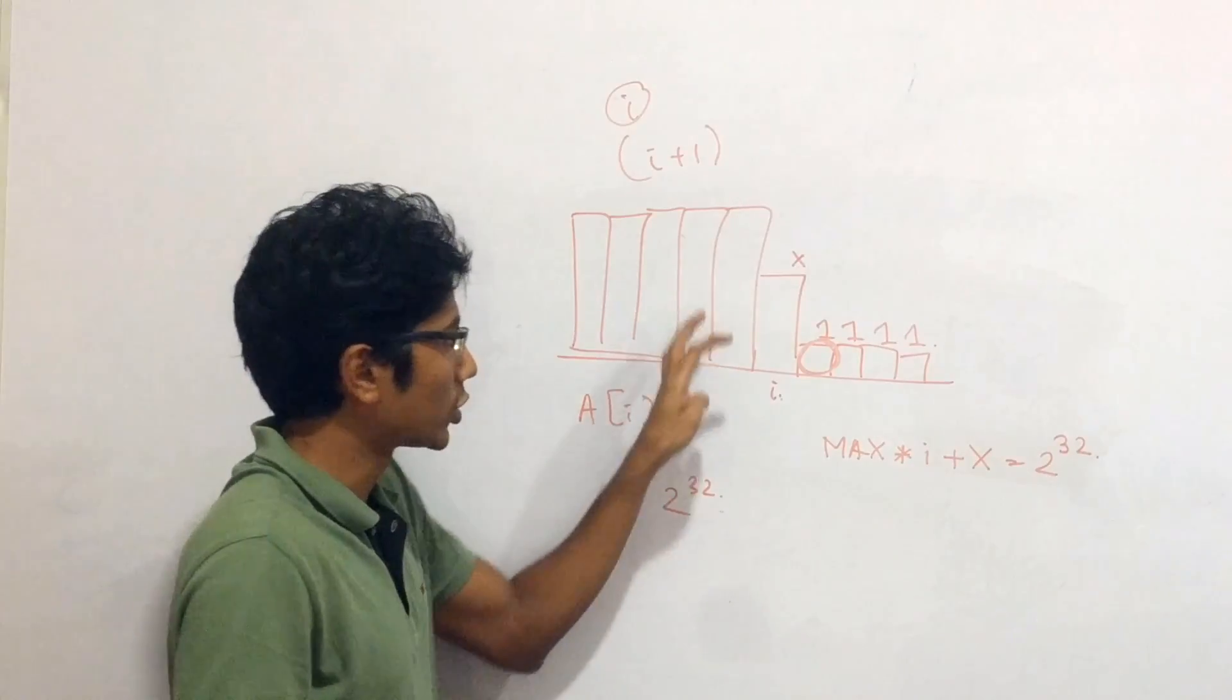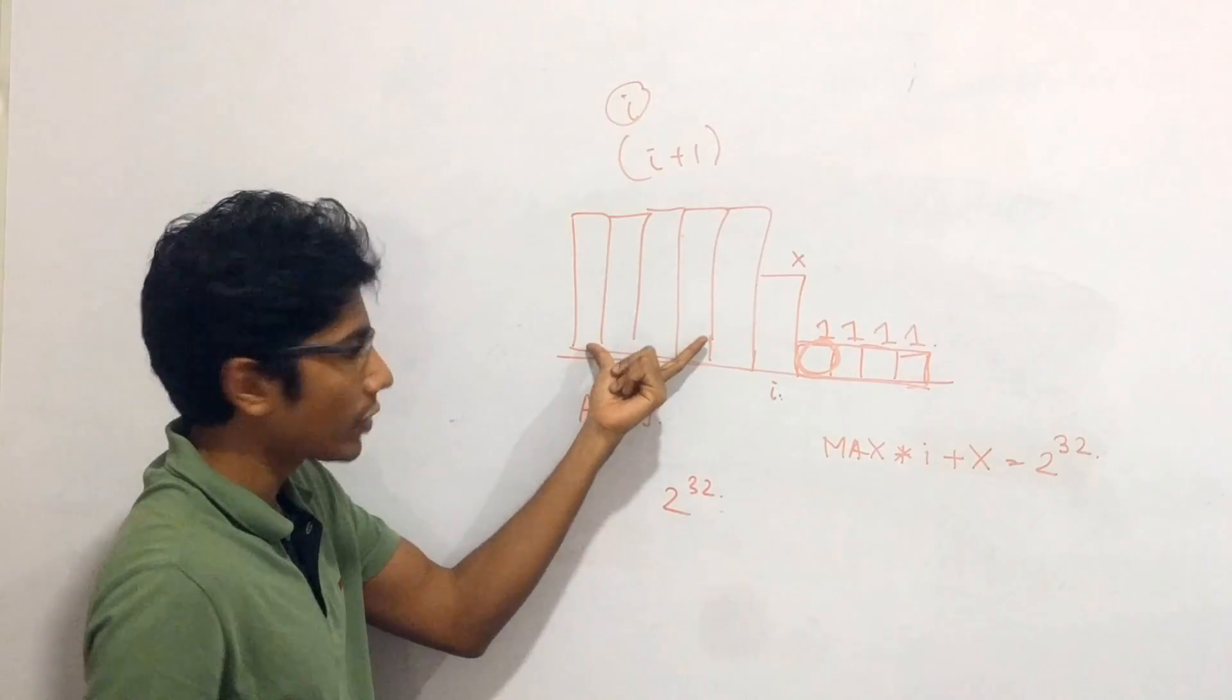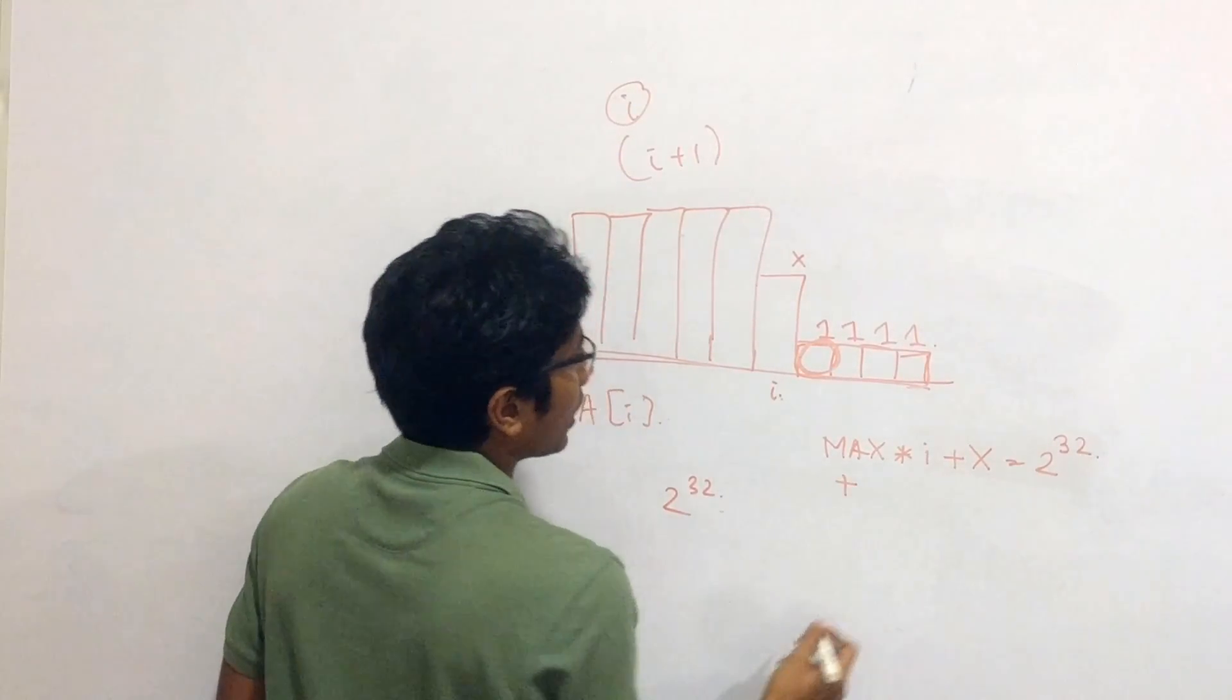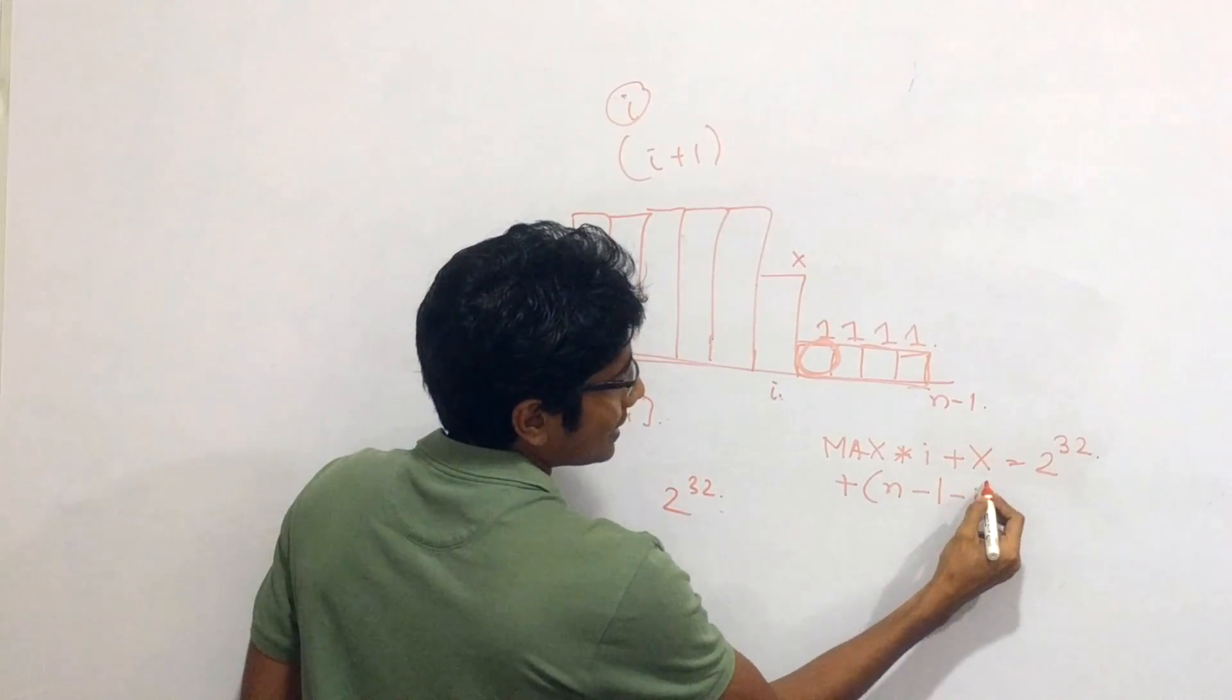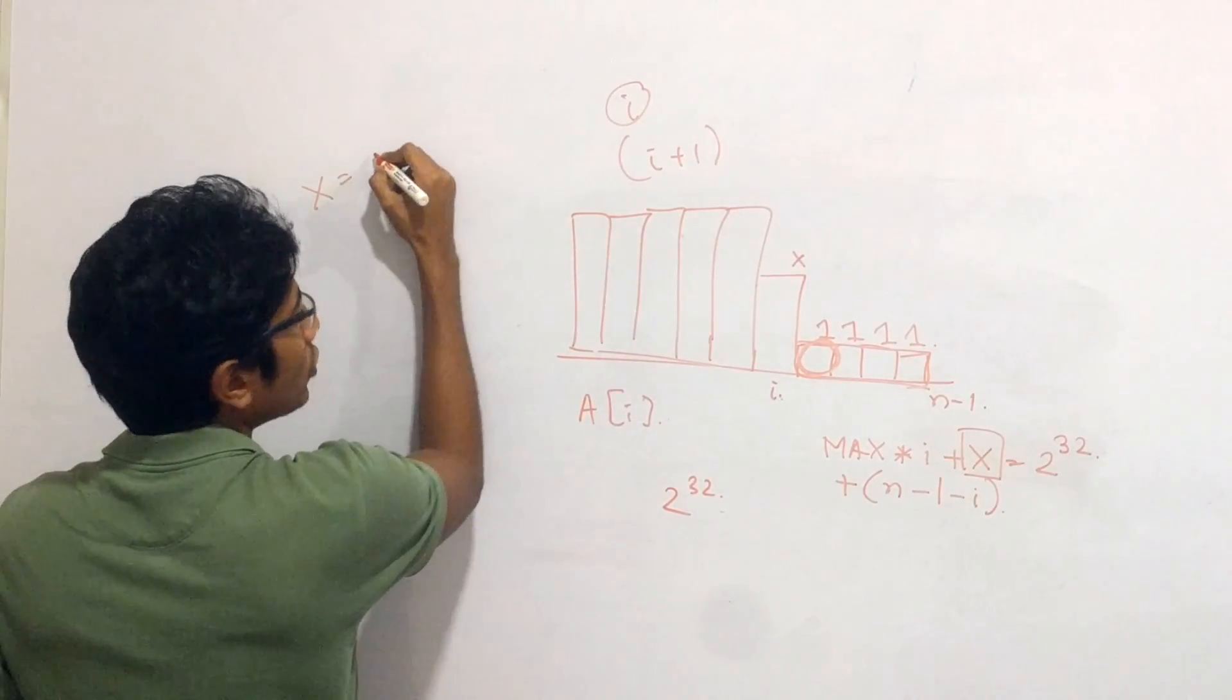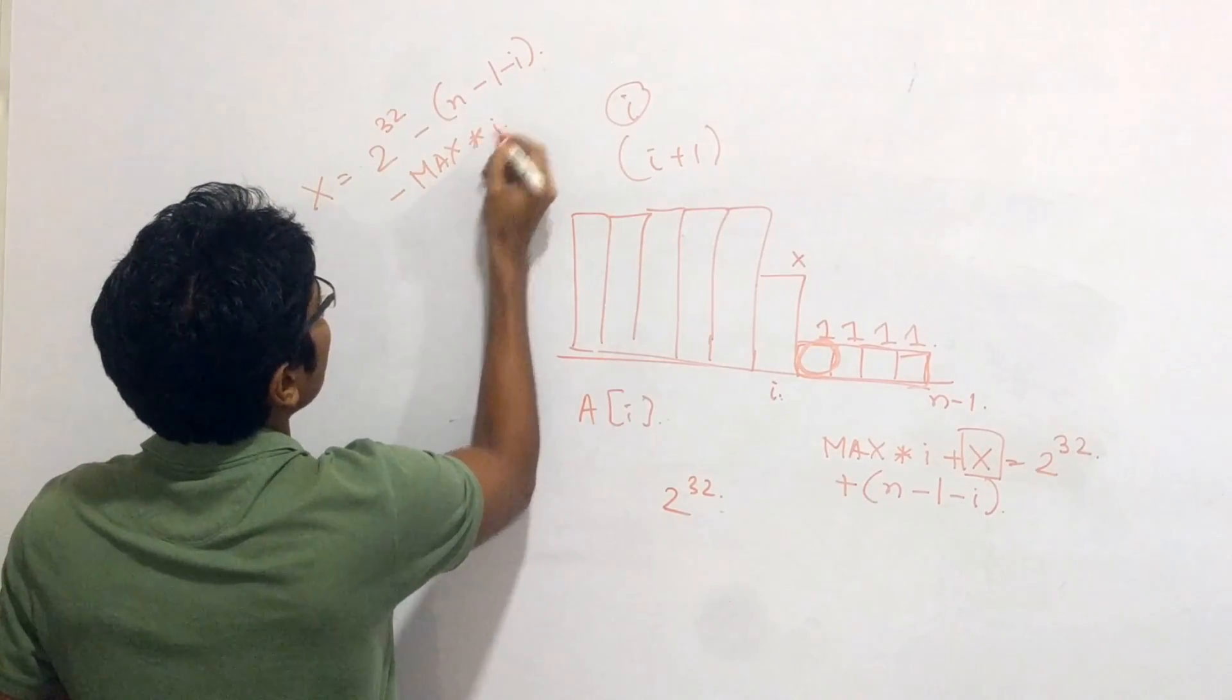There are some issues with this kind of approach. And we'll just talk about that now. One thing is that we haven't actually considered the sum of these numbers. That's the first mistake I made. If you have this kind of an approach, you need to consider the sum that these numbers also make. So that's also pretty simple. So max into i plus x plus these numbers, let's say n minus 1 is the last index. Then you have n minus 1 minus i added to this sum. So all you need to do now is find this value x. It's pretty simple. You have x equals 2 raised to the power 32 minus n minus 1 minus i minus max into i.